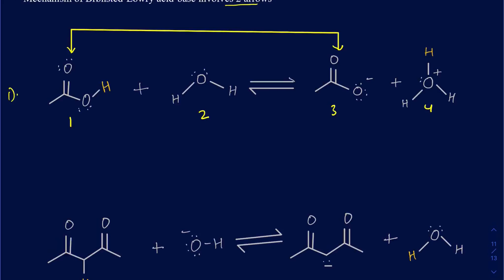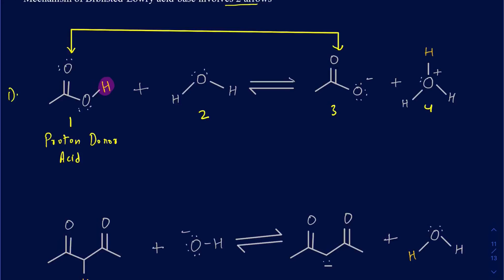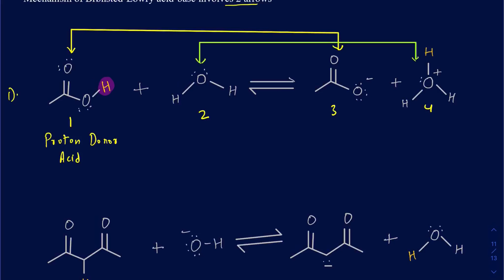Going from compound 1 to compound 3, all we're doing is losing a proton — the proton is no longer there on compound 3. So compound 1 is acting as a proton donor, meaning it's the acid. Now doing the same for the second chemical, which is water: going from water (compound 2) to product 4, there is an addition of a proton. As a result, compound 2 must be acting as a proton acceptor, so it's the base in this reaction.